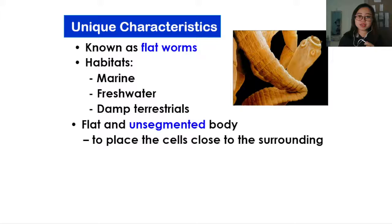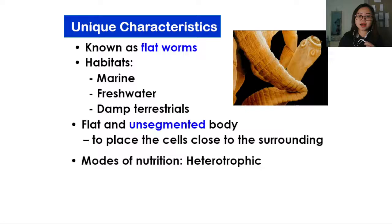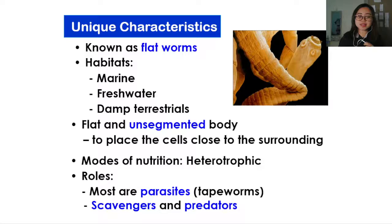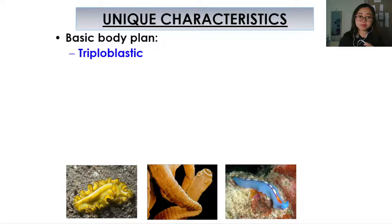Flatworms are flat and they have an unsegmented body. This is to place the cells close to the surrounding. The modes of nutrition of Platyhelminthes are as heterotrophs. Their roles are mostly as parasites — with the famous example of tapeworms — but also as scavengers and predators in their own environments.